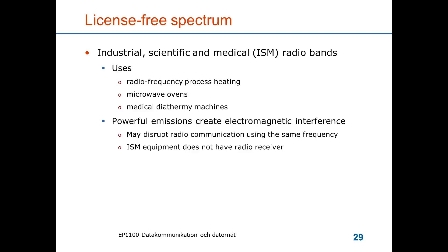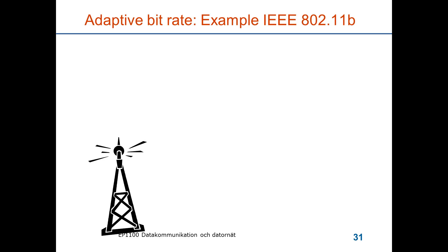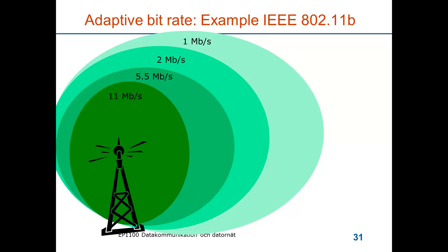The two ISM bands used regularly are 2.4 GHz, with a bandwidth of 100 MHz, and a higher frequency band around 5.7 GHz, with a bandwidth of 150 MHz. The physical layer of 802.11 uses adaptive bit rate to handle varying signal quality. For example, 802.11b has a maximum bit rate of 11 Mbps at high channel quality, stepping down to 5.5, 2, and ultimately 1 Mbps under degraded conditions.